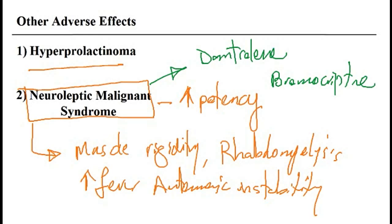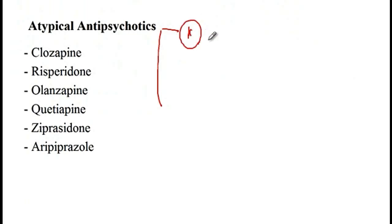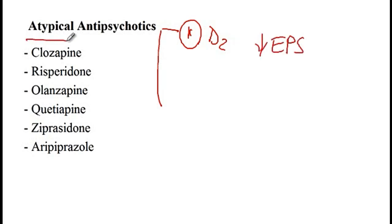The next class of medications are atypical antipsychotics, such as clozapine, risperidone, and olanzapine. These medications have two mechanisms of action. First, they act on dopamine D2 receptors more specifically in the mesolimbic tract and less in the nigrostriatal tract. Therefore, there are fewer extrapyramidal side effects with atypical antipsychotics due to their greater specificity for the mesolimbic tract.